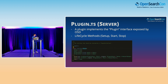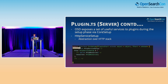Moving on to the server side of things — it looks almost identical, but the core setup and core start will be slightly different and more tailored towards interacting with your OpenSearch cluster. The overall structure and when those lifecycle methods are called are pretty similar. One thing we'll be going over is the HTTP service setup provided to the server-side plugin via core setup. This is where you will register any custom routes for OpenSearch Dashboards for your plugin — or other plugins — to access.